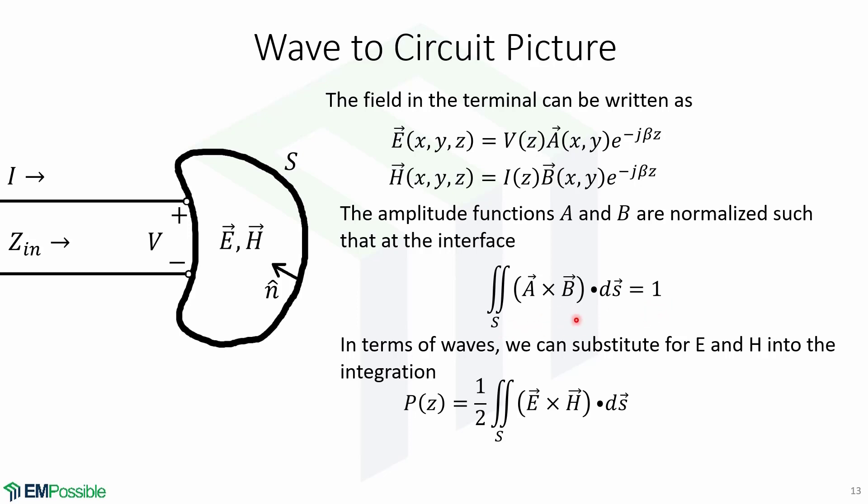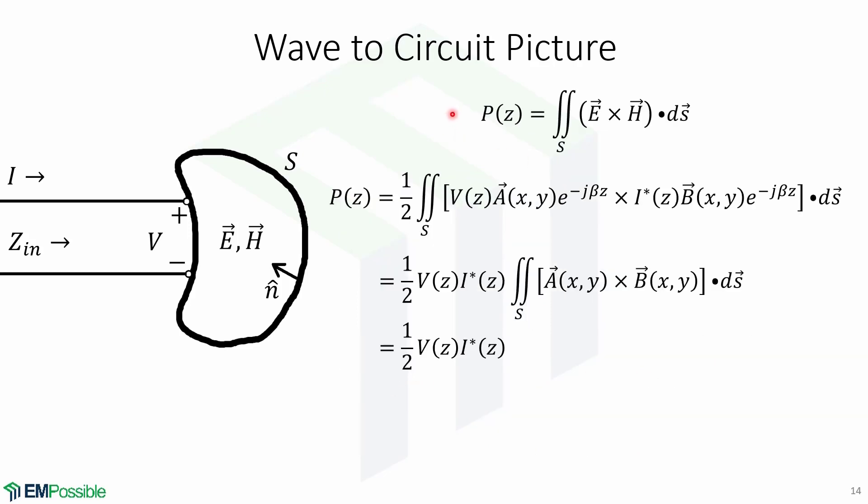Now in terms of waves, we can substitute for e and h into the integration to have this expression. Now we are ready to move from wave parameters to circuit parameters. Starting from this expression, we can substitute e for this and h for this. Now we can move V_z and I_z outside of the integral, and recall in the previous slide that this integral is equal to 1. So the expression for power is equal to this.